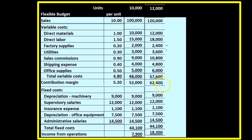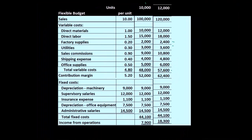Breaking out all these numbers to get to the total variable cost and contribution margin — the 120 minus the 57.6 gives us the 62.4 contribution margin. Fixed costs, once again, are the same.